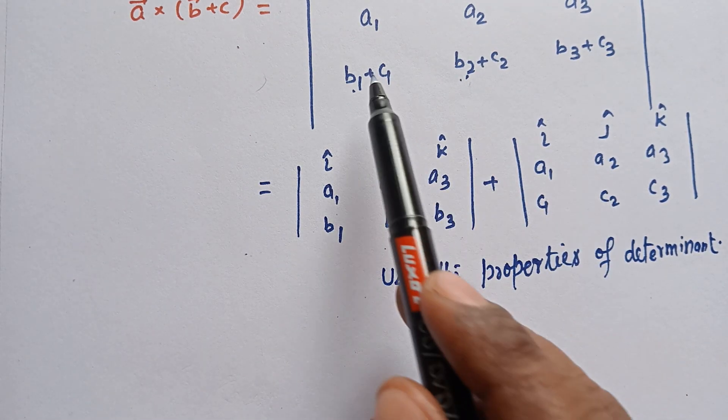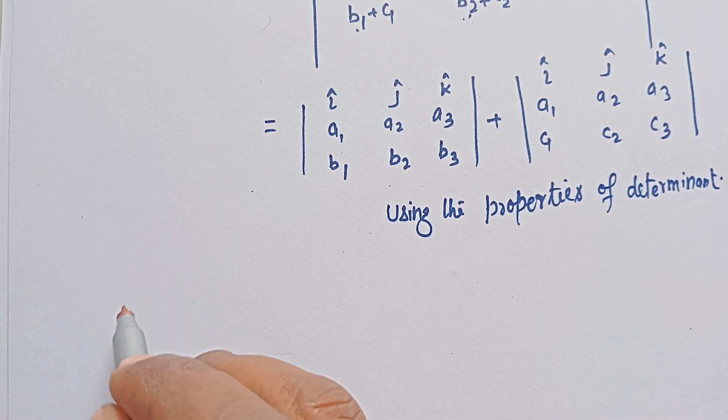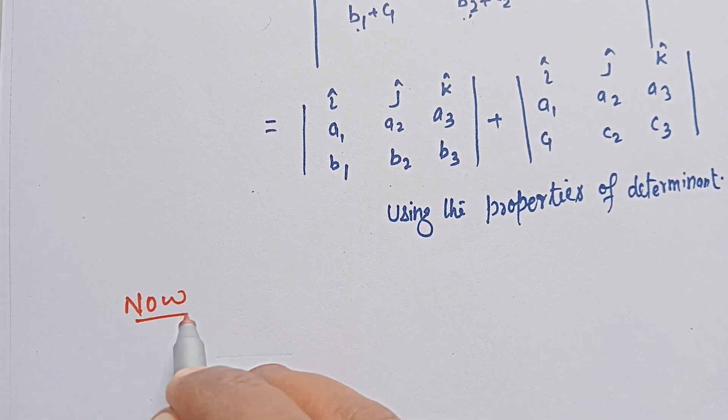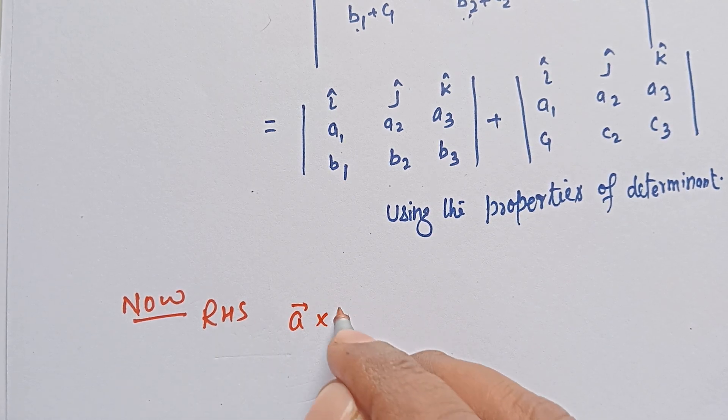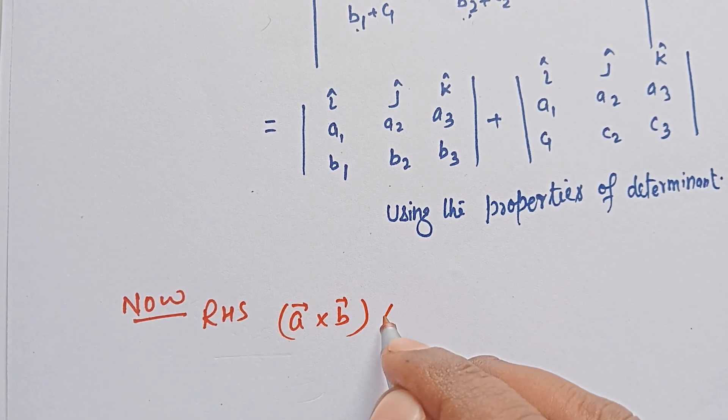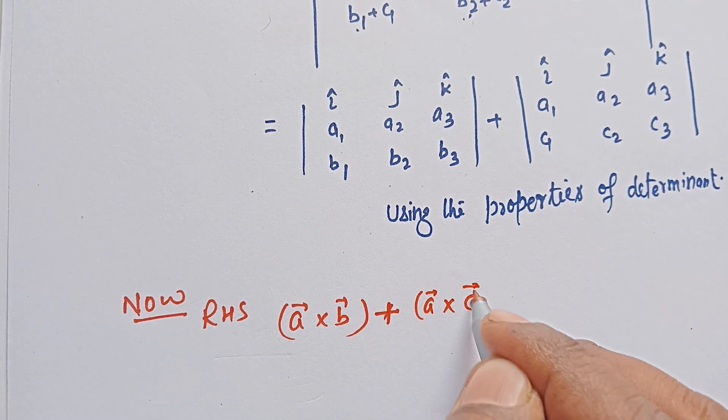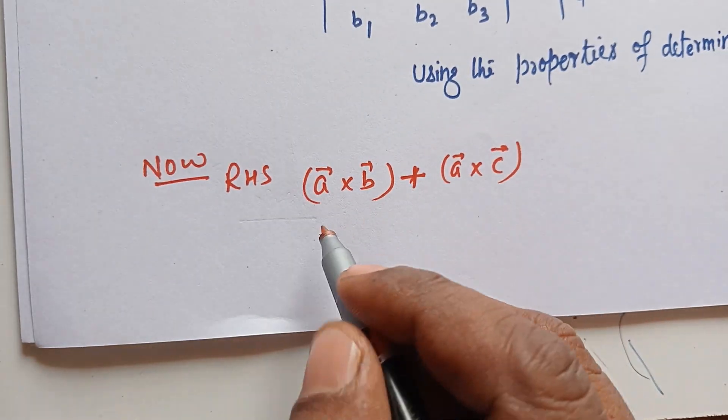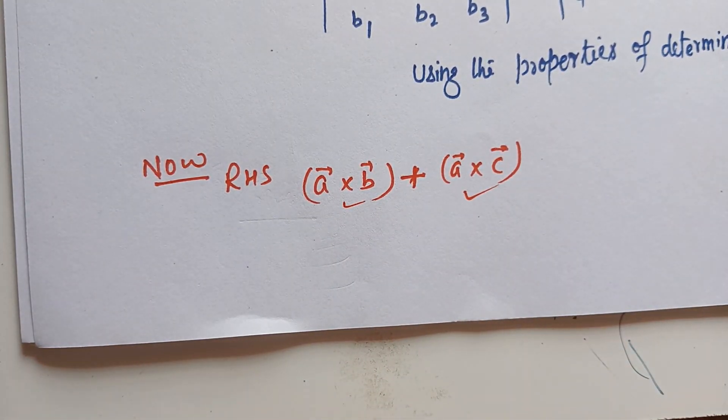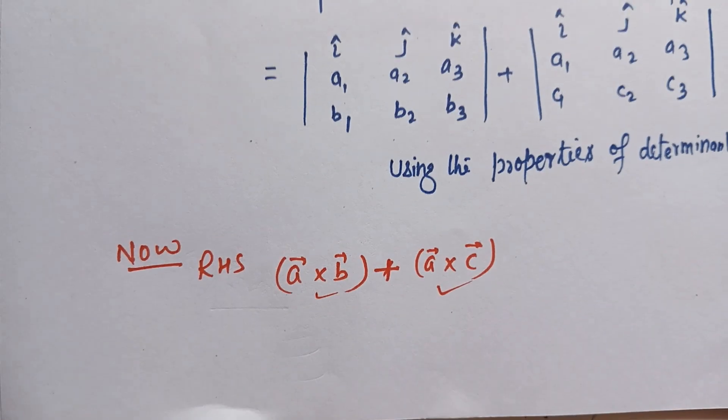Now RHS: A×B plus A×C. So we can expand A×B, then we can expand A×C, and each other will be together. LHS will be together, so our proof will be together.